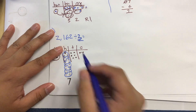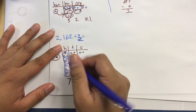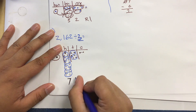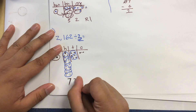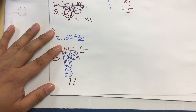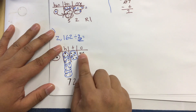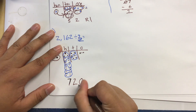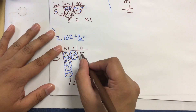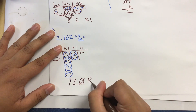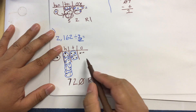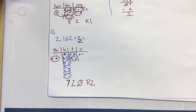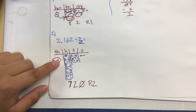Moving on to my tens, I have no remainders from hundreds so I don't need to convert anything. I can make two groups of three from my six tens. For my ones I only have two — I cannot make any groups of three — so that's zero groups, which means my remainder is two. I couldn't make any groups and there's no lower place to convert into, so it becomes a remainder.